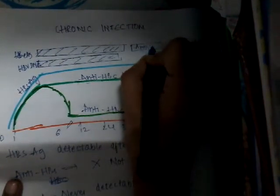HBV DNA is a quantitative marker of replication and is seen to be increased. HBeAg is also increased in chronic infection, and there is seroconversion of HBeAg to anti-HBe. ALT and liver transaminase are increased in the beginning of the cycle, then decrease, and then increase again.